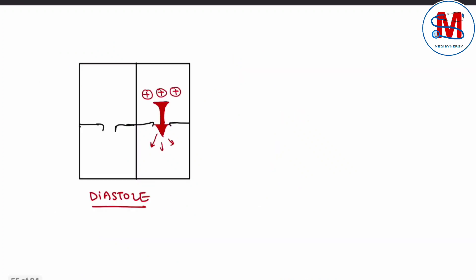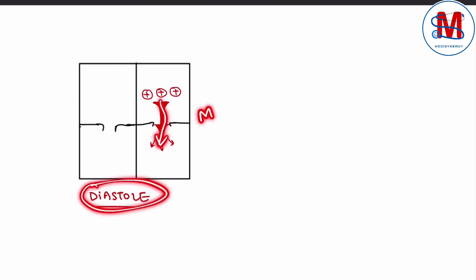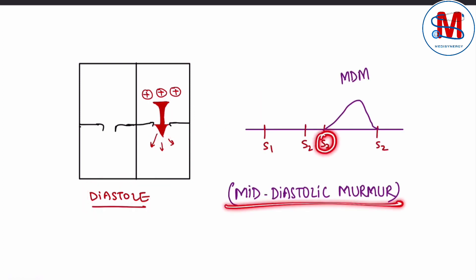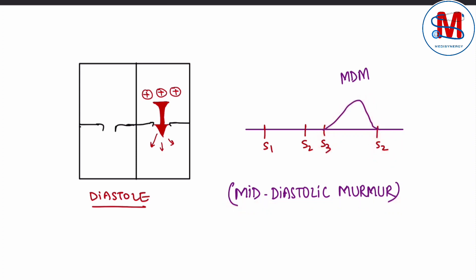Ek condition yahan ban sakti hai: jo blood left ventricle se left atria ki taraf gaya tha, ab wahi blood agar fast se aata hai left ventricle ki taraf, to diastolic phase mein mid-diastolic murmur sunne ko milaigi — A3 aur A2 ke beech mein jo murmur sunne ko milaigi.